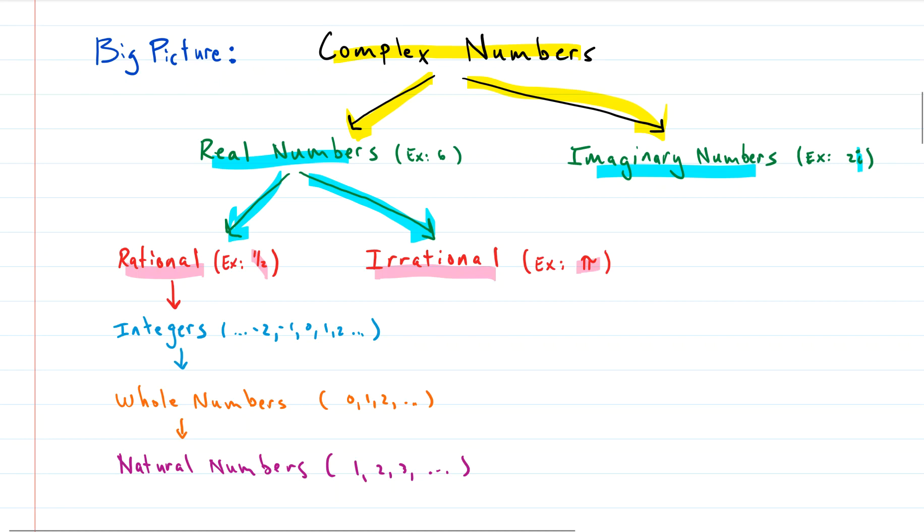Below the rational, we have integers. Negative two, negative one, zero, one, two, etc. Below that we have whole numbers, which just drop off the negative integers. And then the natural numbers, which drop off zero.